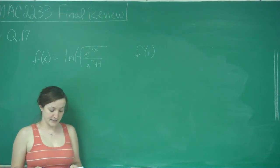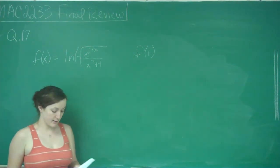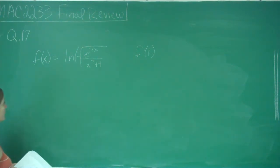This is question number 17, and it says, if f of x is equal to ln of the square root of e to the 2x over x squared plus 1, find f prime of 1.